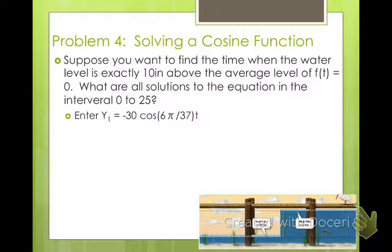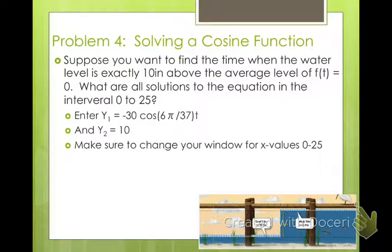So what we need to do is we need to take our two functions. In your y1, put negative 30 cosine 6 pi over 37 times x into your y1. And then in your y2, we want to look at when y is 10. So go ahead and put y equals 10 into your y2 button. Now we're looking at x values from 0 to 25. So you may need to go into your window and change your window from your x min being 0 to your x max being 25. So you can see all the times that these two cross each other.